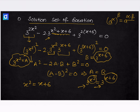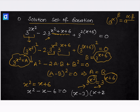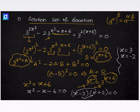We can write this as x squared minus x minus 6 is equal to 0. That is x minus 3 into x plus 2 equal to 0. So x's values will be x is equal to 3 and x is equal to minus 2.